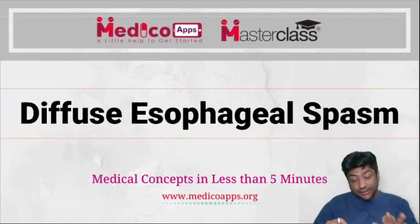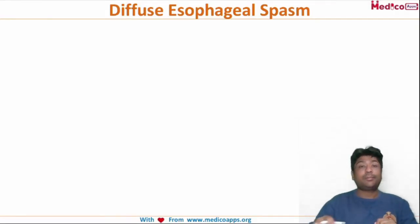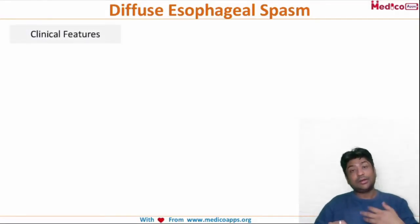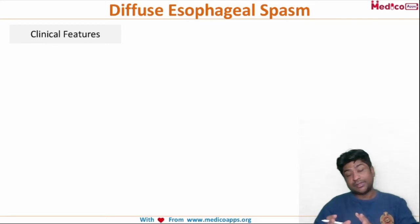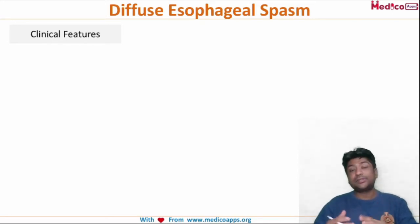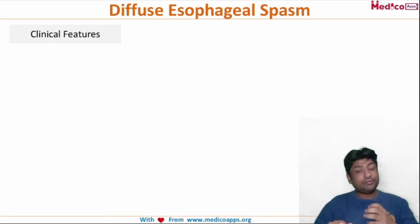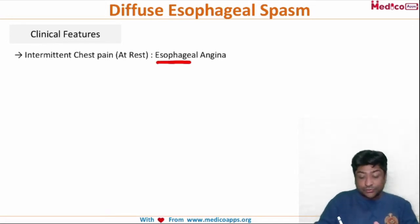The next topic is diffuse esophageal spasm. How will a patient of diffuse esophageal spasm present to you? The patient will be relatively young but will have chest pain. He may present to you in a cardiology OPD and this chest pain — this angina — will be at rest. When you work this patient up with various cardiac parameters like ECG, stress test, echo, and troponin, all will be negative, but he is having very heavy chest pain. This is why we call it esophageal angina.